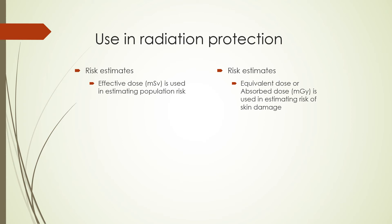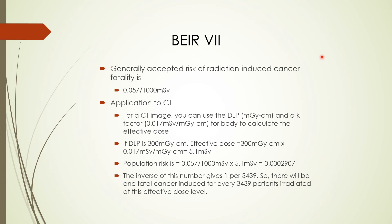Effective dose is used in estimating population risk. Population risk refers to the induction of additional cancers in the population as well as hereditary effects. In diagnostic imaging, equivalent dose or absorbed dose is used in estimating deterministic effects like skin damage from interventional radiology procedures. Risk estimates are based on the Biological Effects of Ionizing Radiation Committee's report, known as BEIR VII. BEIR VII is based on data collected from survivors of atomic bombs dropped on Hiroshima and Nagasaki, survivors of radiation accidents, people irradiated for medical reasons, radium dial painters from the early 20th century, and other radiation-related events. Based on the BEIR VII report, the generally accepted risk of radiation-induced effect is 0.057 per sievert.